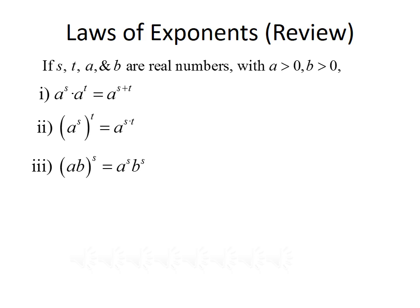Third, a times b raised to the s power equals a to the s times b to the s — we can distribute the s throughout the product a times b. Note this only works for multiplication and division; we cannot distribute the power if it's addition or subtraction. Fourth, 1 to the s equals 1 — 1 raised to any power is just 1. Fifth, a to the minus s equals 1 over a to the s — a negative exponent moves the expression to the denominator. And sixth, a to the 0 equals 1 — anything raised to the 0 power gives us 1.